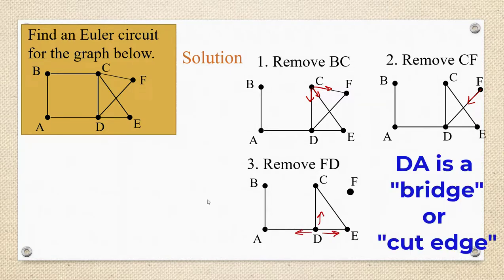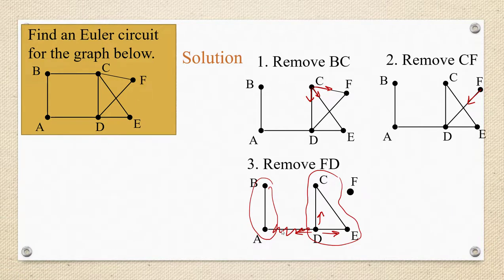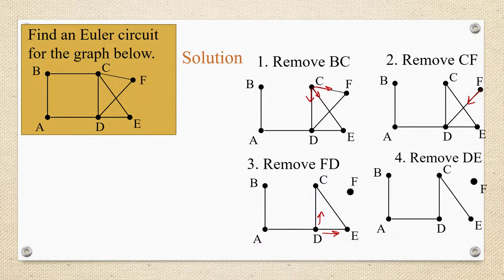But notice that if I were to remove edge DA I would be stuck with two completely separate components and that's not allowed. So we can't use DA. We have to choose between DC and DE. I'm going to go with DE. So I've removed DE and now I'm at vertex E.